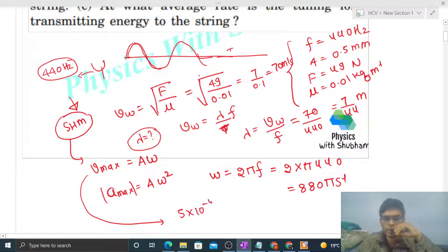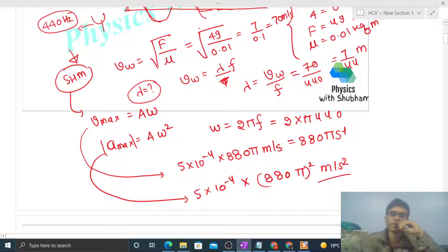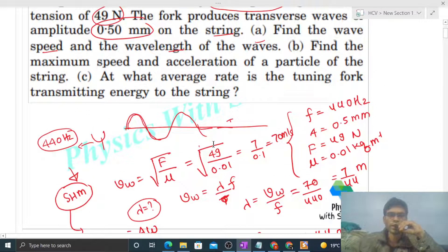And maximum acceleration aₘₐₓ = Aω² = 5 × 10⁻⁴ × (880π)² m/s². Now part c: At what average rate is the tuning fork transmitting energy to the string?